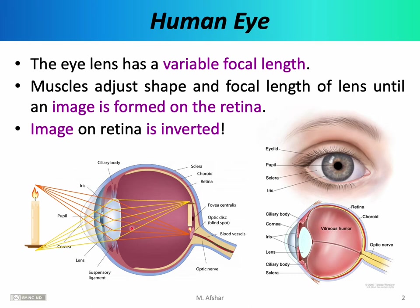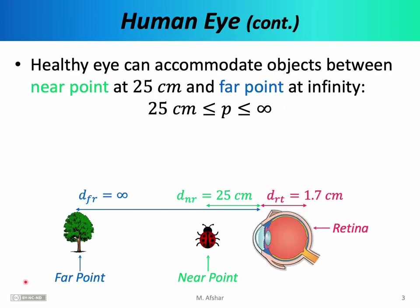The ray tracing here is not very precise, so don't take this picture too literally. The point is that rays of light emanate from objects, refract through the lens of the eye, and eventually arrive on the retina. A healthy human eye can accommodate objects between a near point at 25 centimeters and a far point at infinity. That means someone with 20-20 vision should be able to see objects as close as 25 centimeters — the near point — and as far as infinity — the far point.